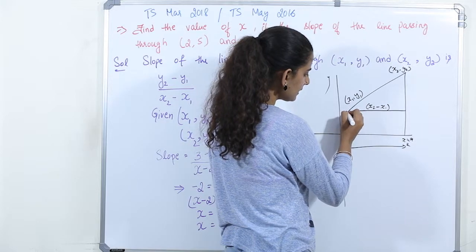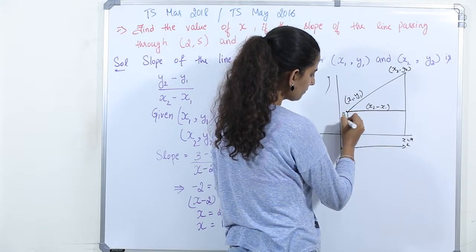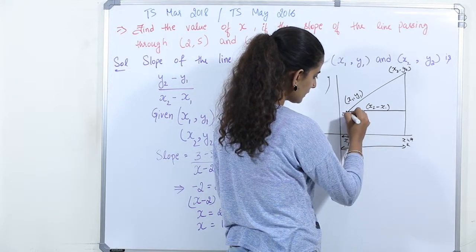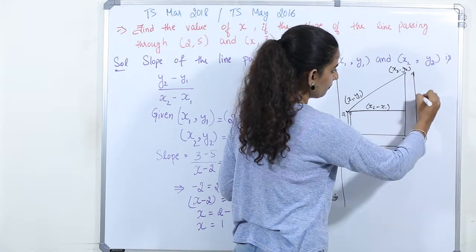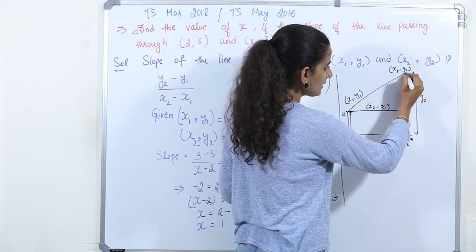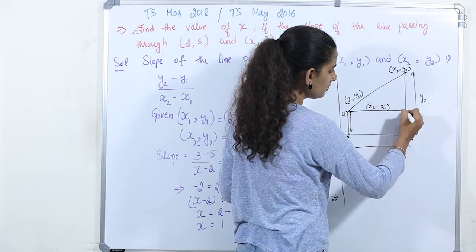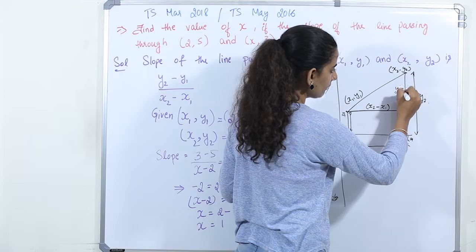Similarly, this is y1, this distance is y1 and this distance is y2. So if you need the distance from here till here, then it is y2 minus y1.